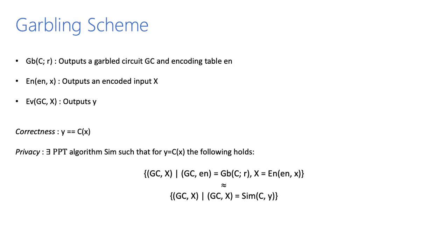Let me briefly go through the building blocks. We require garbling schemes. A garbling scheme consists of three algorithms: it takes as input a circuit C and randomness R, and outputs a garbled circuit GC and the encoding table EN. The encoding algorithm takes the encoding information and input X and outputs the encoded input. The evaluation algorithm takes the garbled circuit and encoded input and computes output Y. Correctness ensures Y equals C(X). Privacy of the garbling scheme ensures that the encoded input does not leak anything about the private input X, captured using a PPT simulator which outputs the garbled circuit and encoded input given only the output Y.